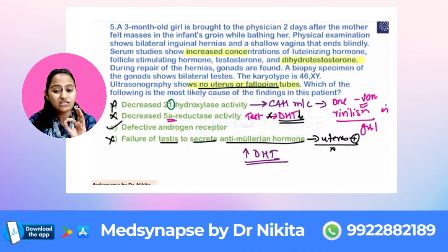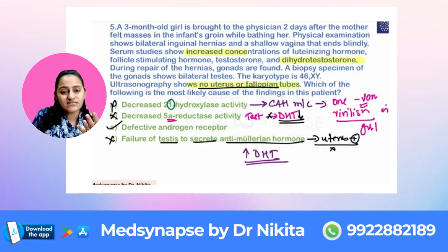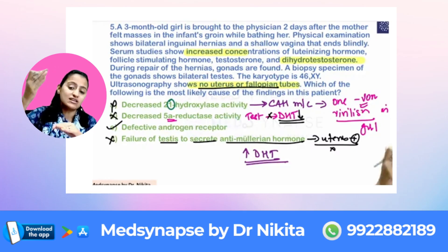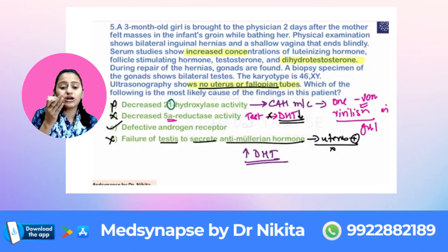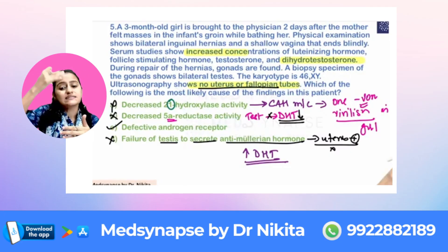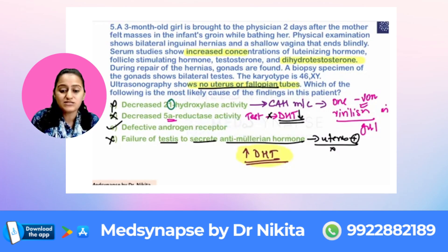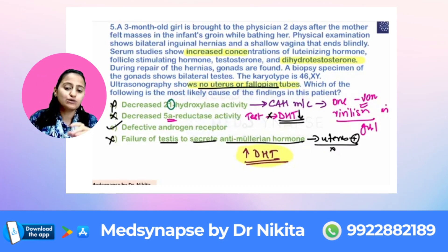The answer is defective androgen receptor — this is a resistance syndrome. When there is insulin resistance, insulin levels increase. When there is nephrogenic diabetes insipidus, the kidney is resistant to ADH, so ADH levels increase. Similarly, when there is androgen resistance because the receptor is not responding, the dihydrotestosterone levels will increase. The increased dihydrotestosterone levels are present but not able to act — that is the clue for defective androgen receptor.